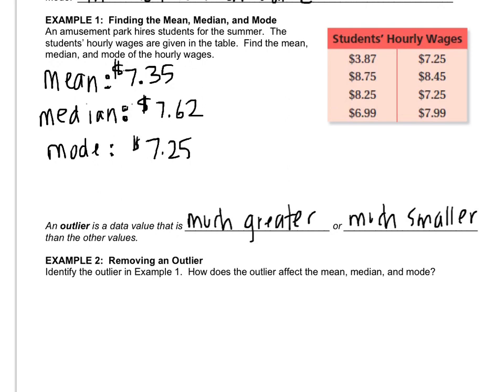So, let's identify the outlier in this chart and figure out how it changes the mean, median, and mode. So, you see this person right here, I don't know what they're doing, but they're getting $3.87, and pretty much everyone else is getting either $7 or $8. So, $3.87 is clearly the outlier.